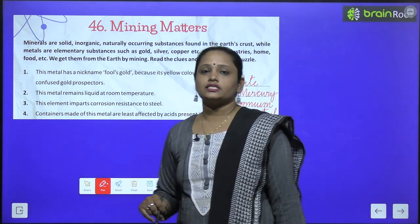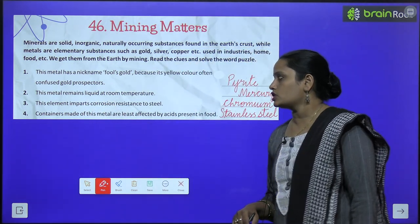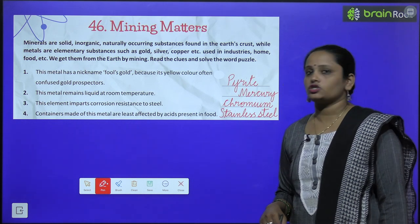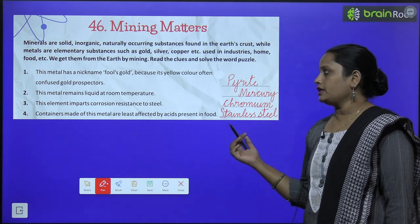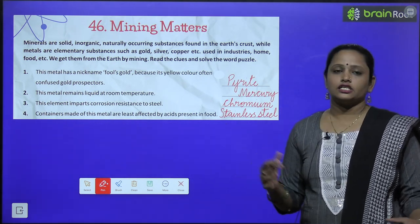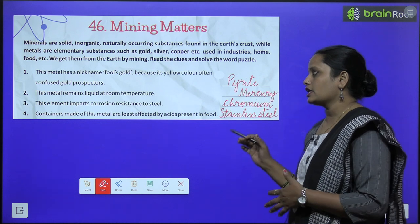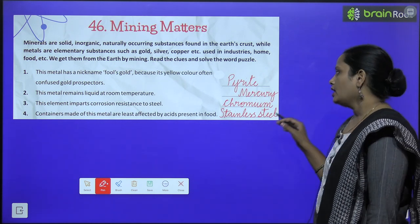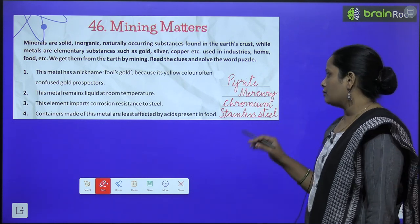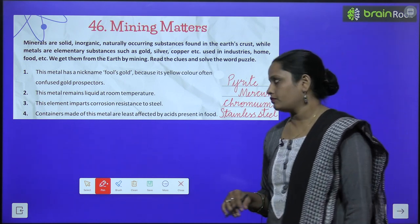Next third one is: this element imparts corrosion resistance to steel. Yeh jo element hai, yeh kya karta hai — steel ko corrode hone se, means jang lagne se bachha deta hai. And this element ka naam hai chromium.